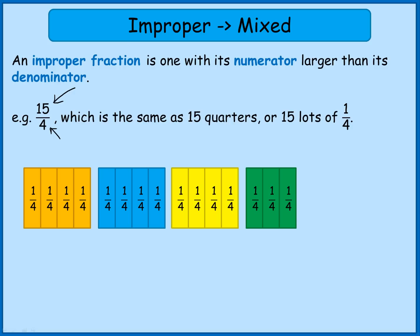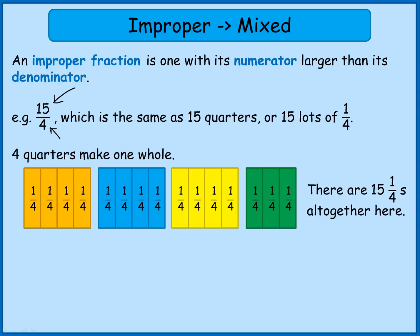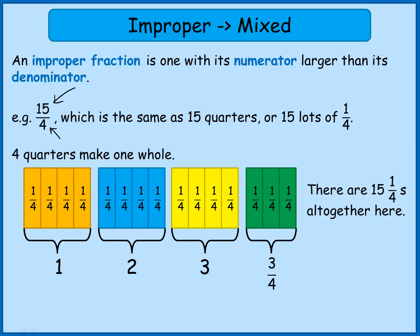I haven't put these out randomly — I've grouped them in a particular way. So I've got 15 quarters all together, but I need to remember that 4 quarters makes one whole one. In the orange block, we've got 4 quarters — that's one whole one. In the blue block, another 4 quarters, so that's 2 whole ones. The yellow block gives another lot of 4 quarters, getting us to 3 whole ones. I've then got 3 quarters left over, so altogether I've got 3 whole ones and 3 quarters. I could write 15 quarters as 3 and 3 quarters.